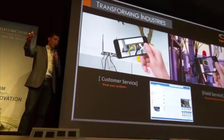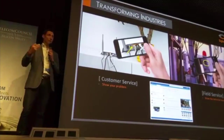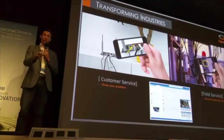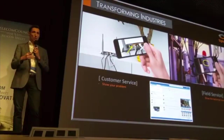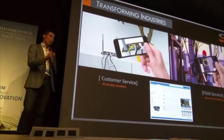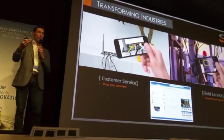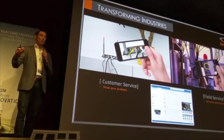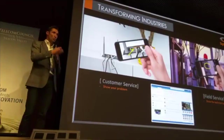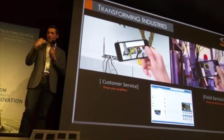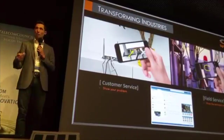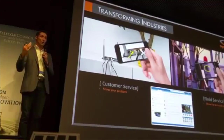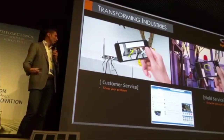Everything can start with just a call to your contact center, and then the agent's platform will be able to send a text message to the customer with an embedded link. When the customer clicks on it, it will start directly the back camera of their smartphone. Because what we discovered is that the main use case is about seeing the problem and helping the customer solve it in the most effective way — not seeing the person as you do with FaceTime with family.